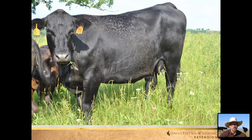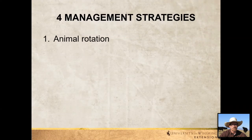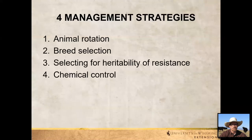We do not want to get into situations like this — this is a beef cow that has over a thousand flies. So let's talk about four management strategies. The first is animal rotation. The second is breed selection. The third is selecting for heritability of resistance. The fourth is chemical control.